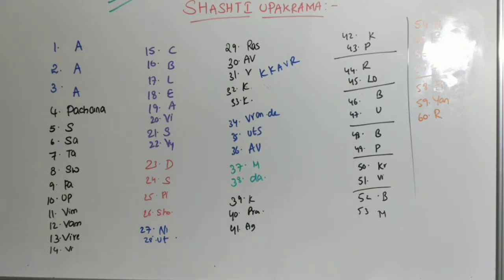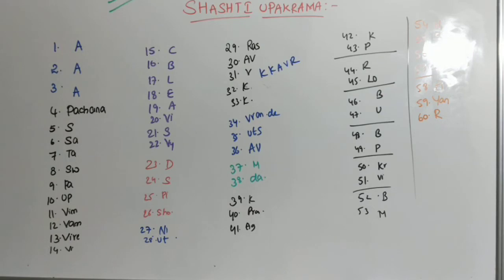If you look at the board, I have made a clear demarcation regarding each and every set. The first set is three A's: Apatarpana, Aalepa, and Abhyanga. The fourth one begins the second set — Pachana, then Snehana. In the act of Snehana, you may write Sarpi and Thaila. These are the sixth and seventh ones.